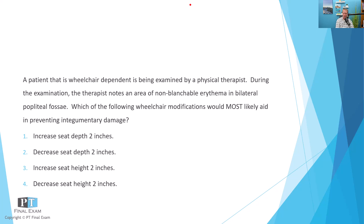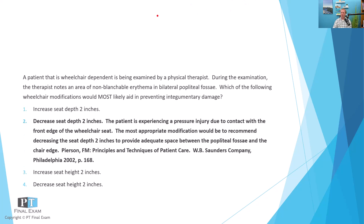So it's a mix-and-match question — increasing or decreasing the seat depth, or increasing or decreasing the seat height. Which one is most likely to reduce or prevent the integumentary damage occurring in the bilateral popliteal fossae? The correct answer is to decrease the seat depth by two inches, because we're having excessive contact with the popliteal fossae. Decreasing the seat depth gives a little more space at the back of the knee.